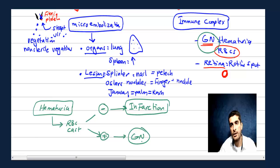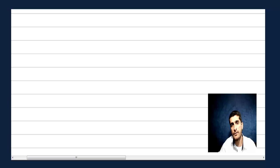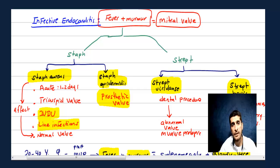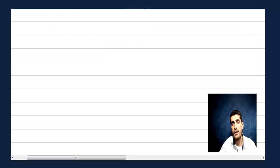Now the second topic: rheumatic fever. The patient is typically around age 15, female. There are six major criteria — the Jones criteria. The patient presents with joint pain that is migratory. For example, knee pain today, then ankle pain after one week — moving from joint to joint.